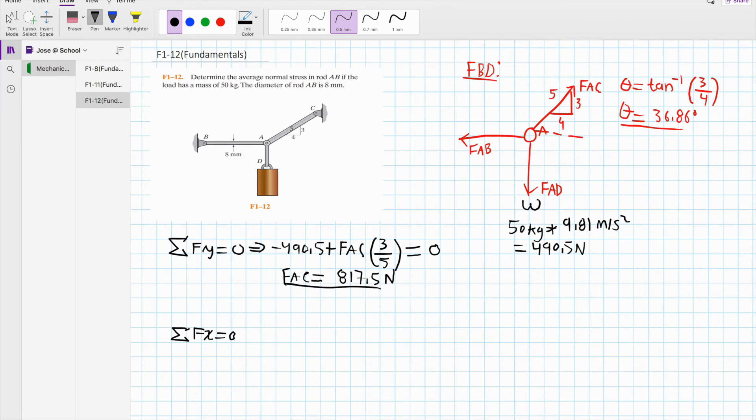Now we go ahead and do the forces in the x. For the forces in x, we have negative FAB because we're assuming tension, plus FAC multiplied times 4 fifths, and we equate this to 0. We already solved in the previous for FAC, which is 817.5, so we simply substitute for FAC.